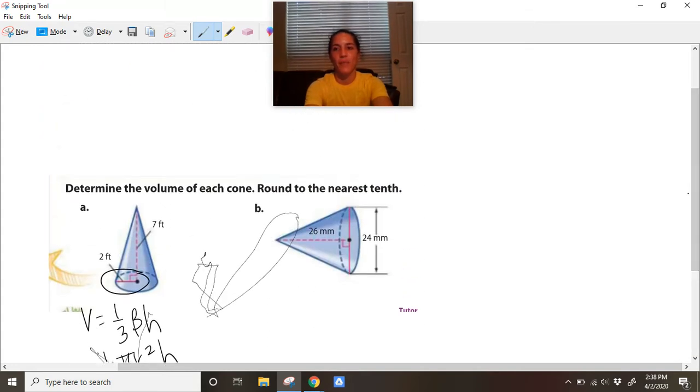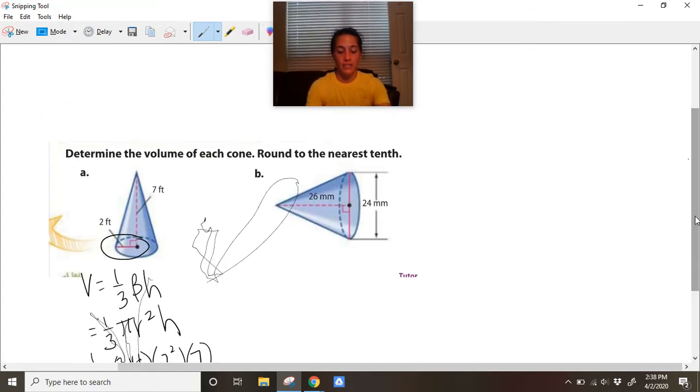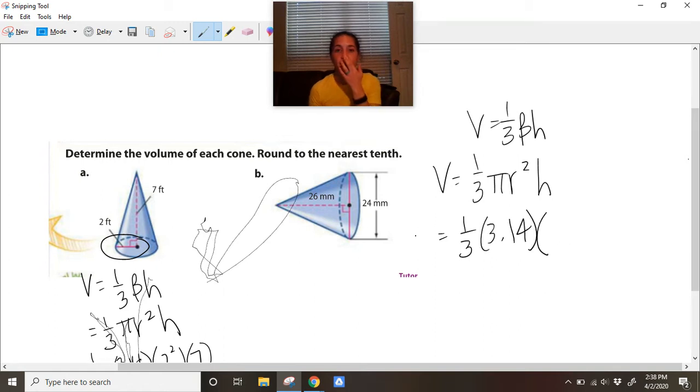All right, so let's do B together. B is a sideways cone but we're still finding the volume: V = 1/3 πr²h. Now the radius - this is the diameter - so the radius is half of that. And then the height, even though it's sideways, this is still the height because that's what makes the right angle. The height is always going to go to the point of the cone.